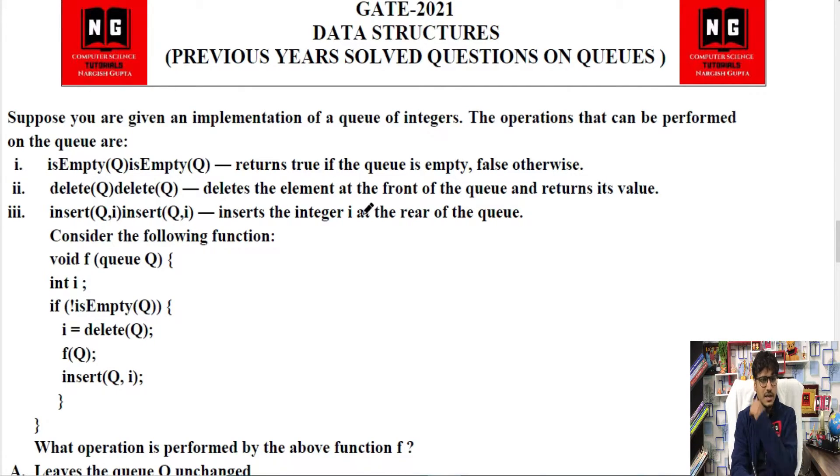Delete will delete the element at the front of the queue and return its value. It will return its value, delete it. Insert queue I will insert the integer I at the rear of the queue. Consider the following function. We have a function given, and it's asking what operation is performed by the above function f.